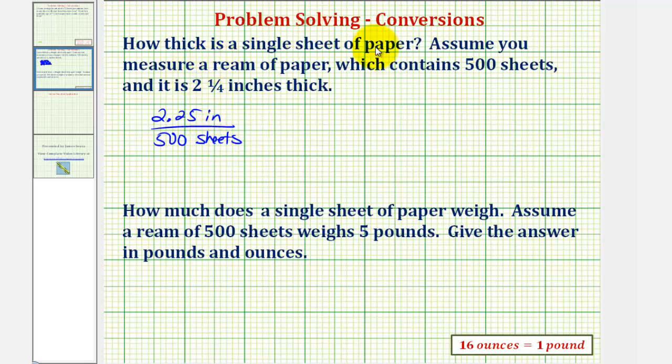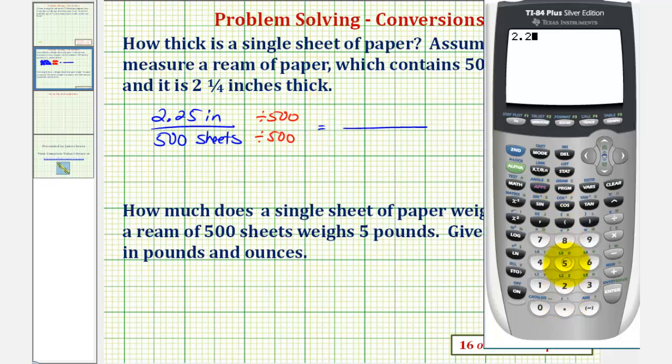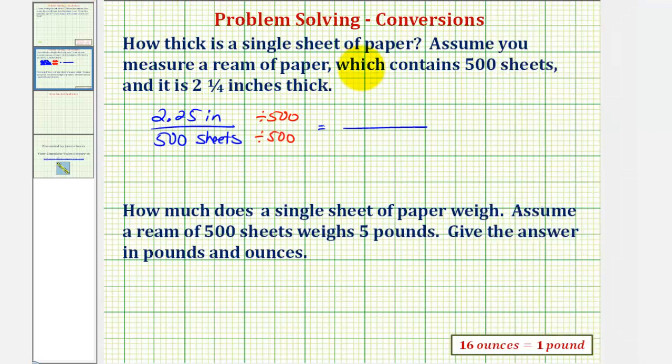And now to determine the thickness of one sheet we want to find the unit rate which would be the number of inches per one sheet not five hundred sheets. And therefore we'll divide both the numerator and denominator by five hundred. This will produce an equivalent unit rate. So two point two five divided by five hundred is equal to zero point zero zero four five.